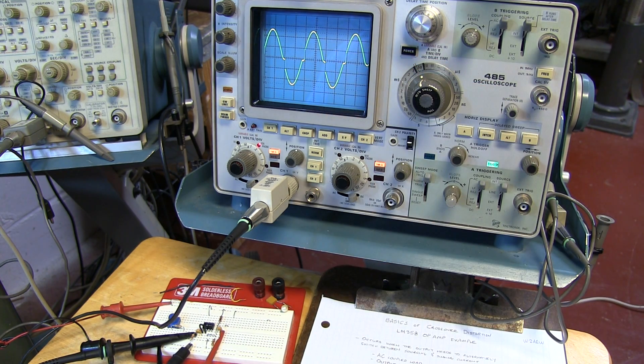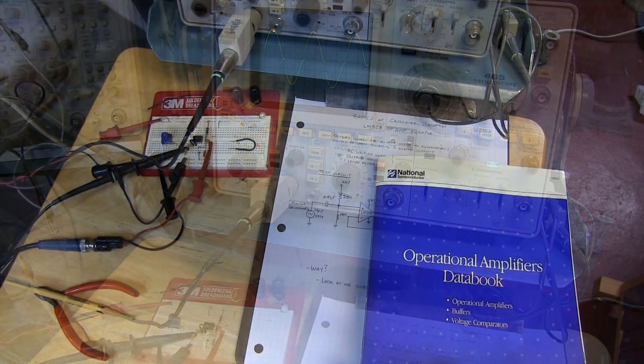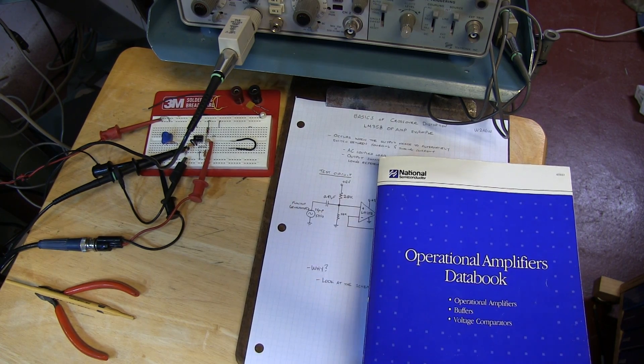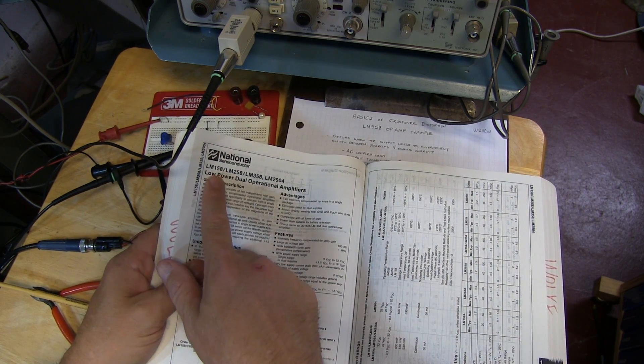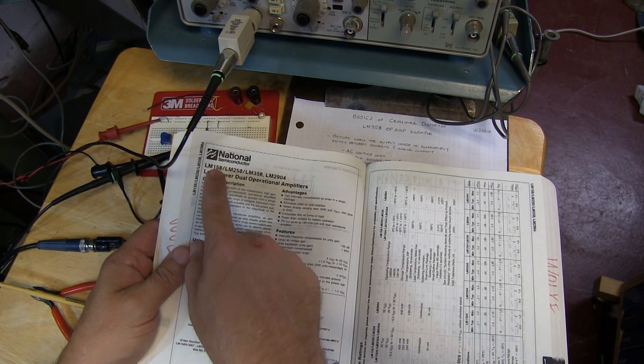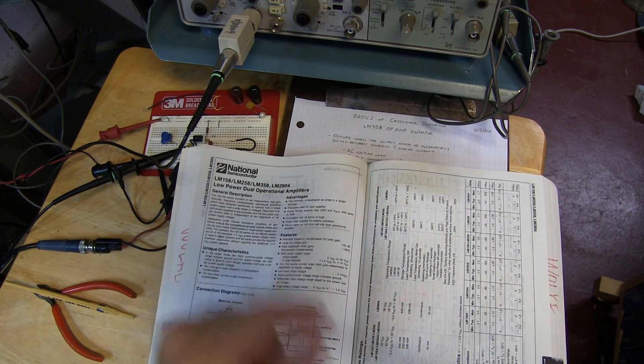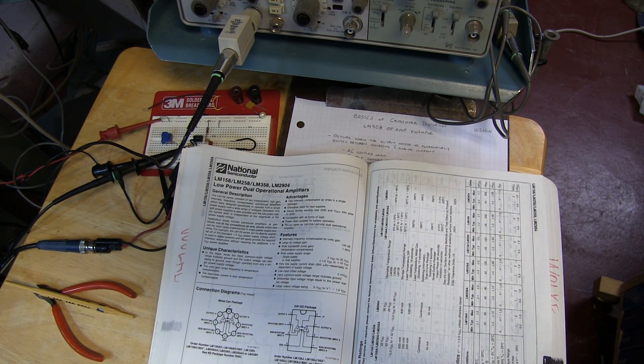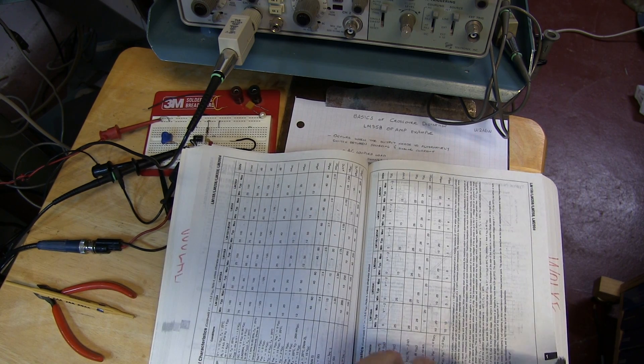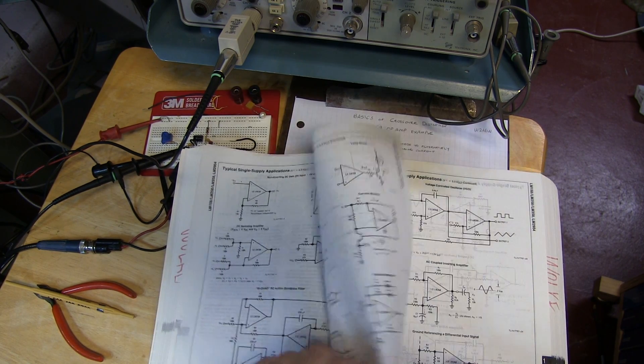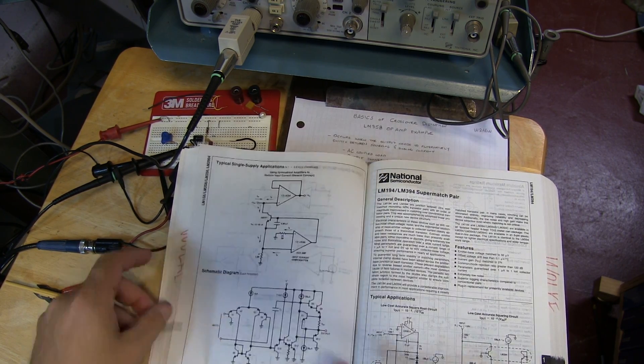So to understand why this is happening, let's take a look at the output stage schematic of the 358 op-amp. We'll break out the old op-amp data book from 1993 from National Semiconductor. There's the data sheets for the LM158, 258, 358, and 2904. And if we scroll back here a couple of pages, we'll find the schematic for the op-amp itself.